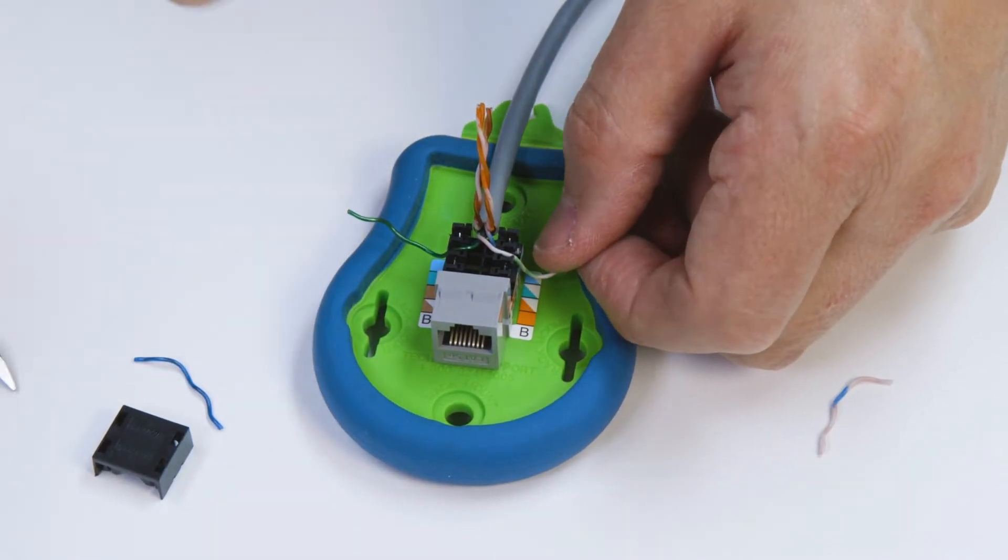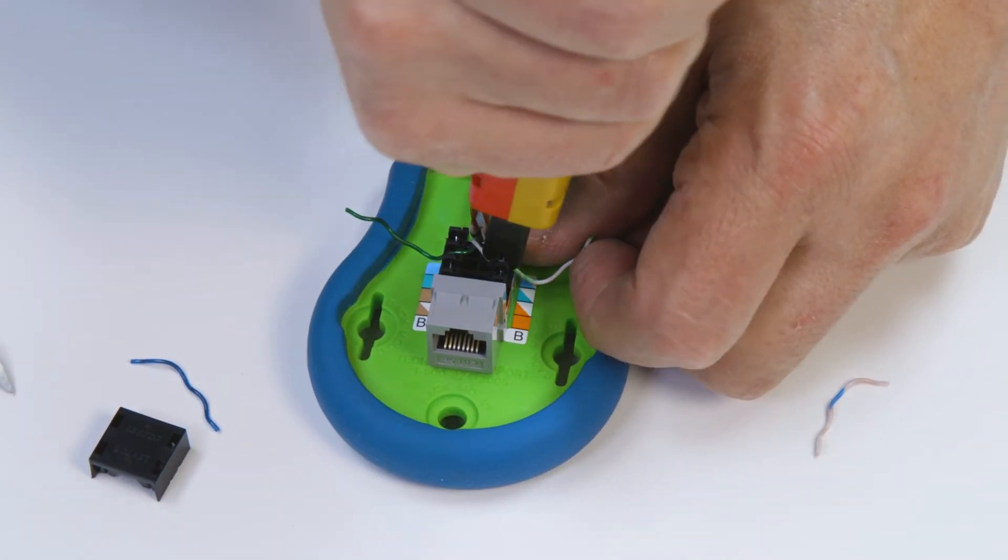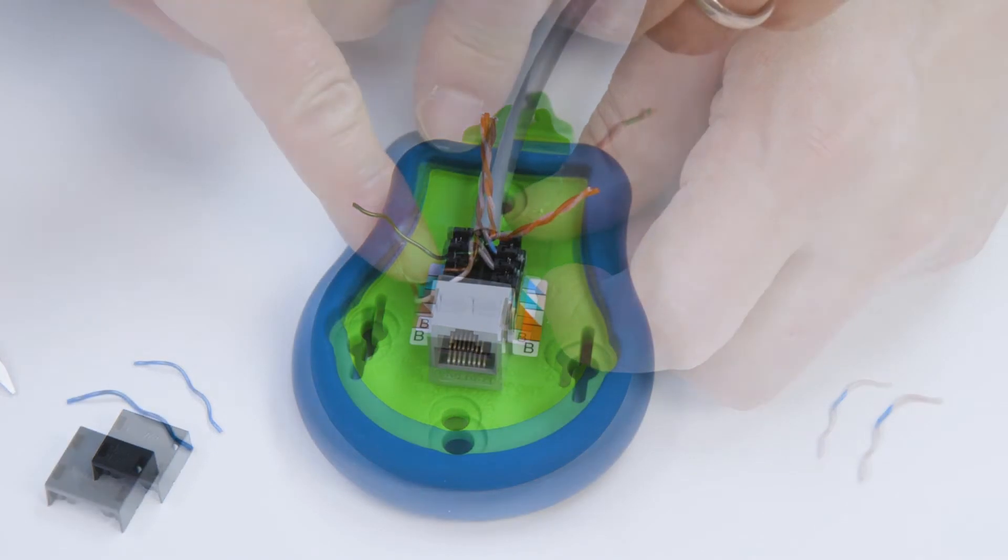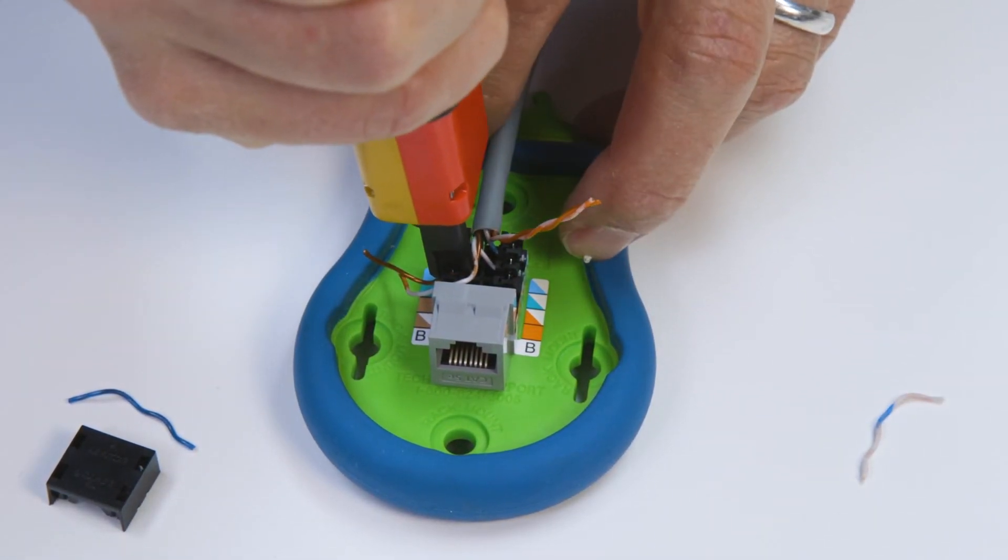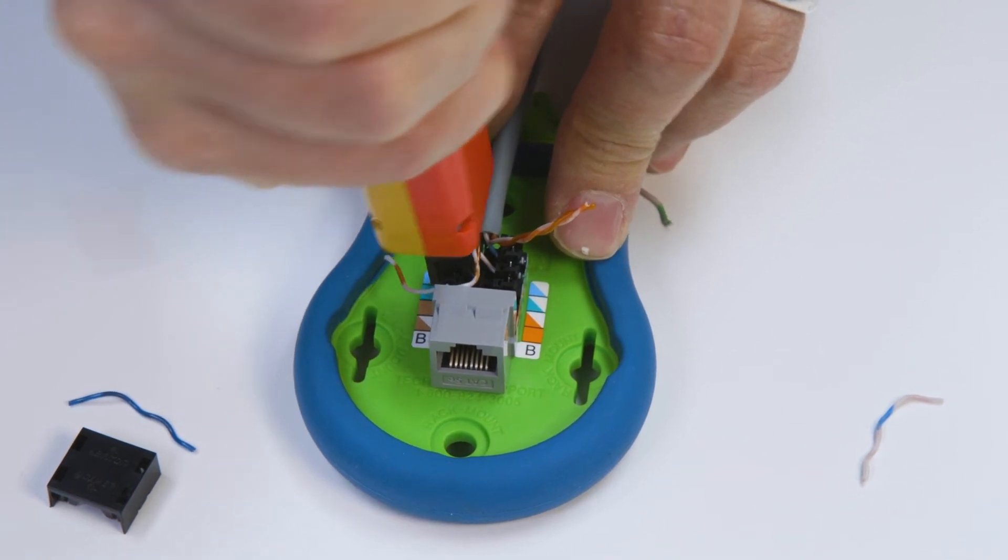You'll repeat this process with the green wires, untwisting only as far as needed. The brown and orange pairs are slotted on opposite sides of the jack corresponding to the color code on the label.